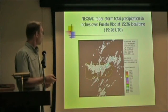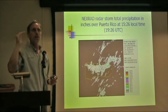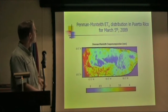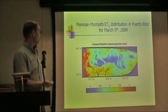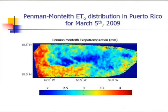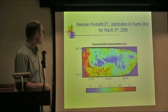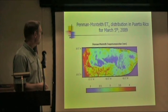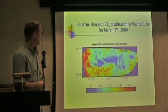What we'd like to know is how evapotranspiration varies from day to day under all kinds of conditions, not only sunny conditions. This is the result of the Penman-Monteith, and it looks like the solar radiation map, which is not surprising because evapotranspiration is highly correlated with solar radiation. The range goes from about two to a little over four millimeters per day, which is quite reasonable. It's very low up in the mountains, and where we saw high solar radiation we have high evapotranspiration.